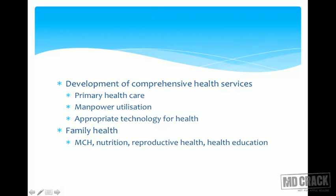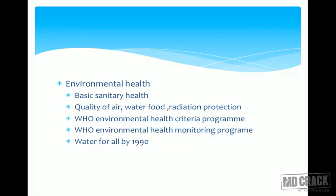Development of comprehensive health services includes primary health care, which was formulated and propagated by the WHO, along with manpower utilization and appropriate technology for health — meaning appropriate use and maximization of local resources. Under family health: maternal and child health, nutrition, reproductive health, and health education. WHO's work in environmental health covers basic sanitary health, quality of air, water, food, and radiation. WHO publishes standards for all these factors, along with guidelines and procedures for testing and monitoring.